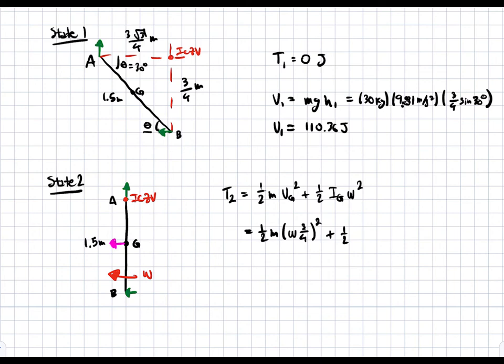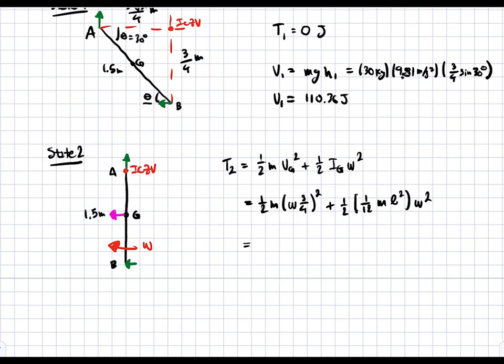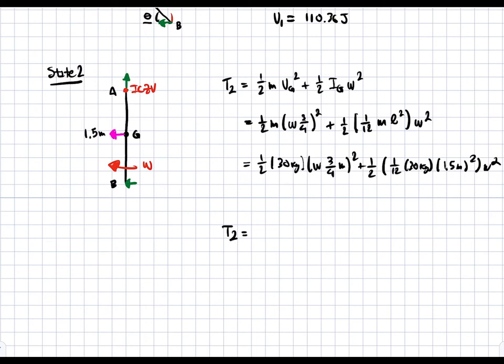Plus one half times ig. Now we need to calculate ig. ig is going to be one twelfth ml squared. So m and then l being the length of the bar, so l squared. And then we're going to multiply it by omega, which we don't know. So if we plug in values into this equation, we get the following: 1/12 times 30 kilograms times omega, 3 over 4 meters squared, plus one half, times 1/12, times 30 kilograms, times 1.5 meters squared, omega squared. And we can solve for T2, and we can find that T2 is going to be equal to 11.25 omega squared. So we have T2 in terms of omega, which is good because that's what we're trying to solve for.